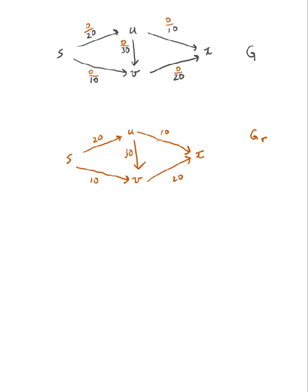The next step is to take our residual graph and find what's called an augmenting path. This augmenting path has to go from S to T, following along the direction of these edges. Let us take, for example, S to U to V to T. That's our path.